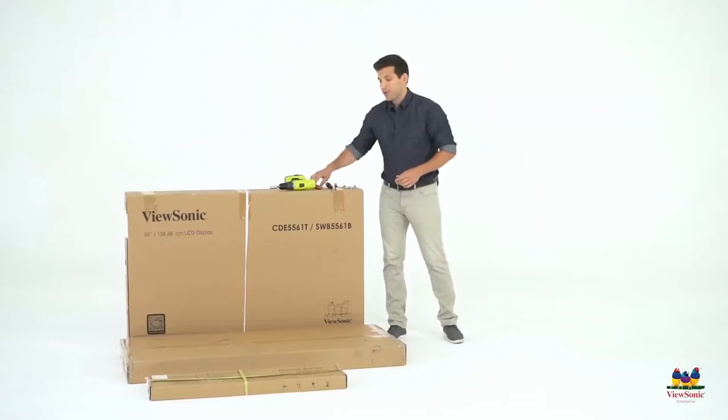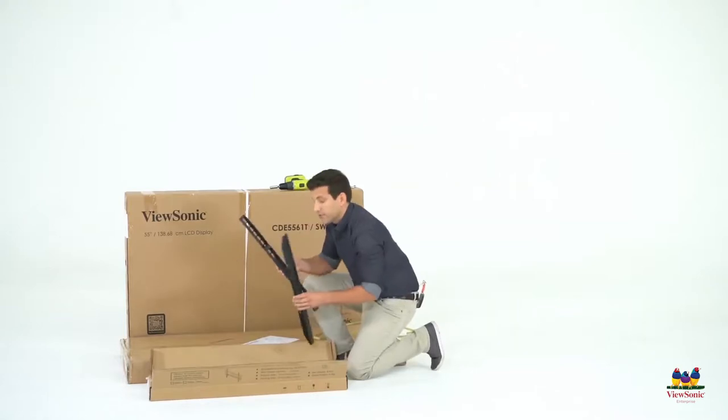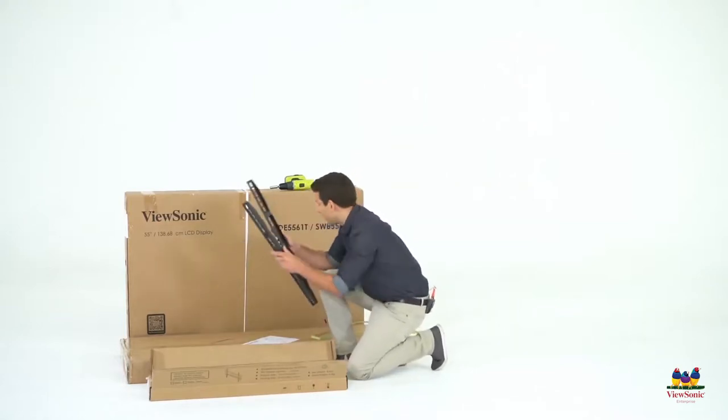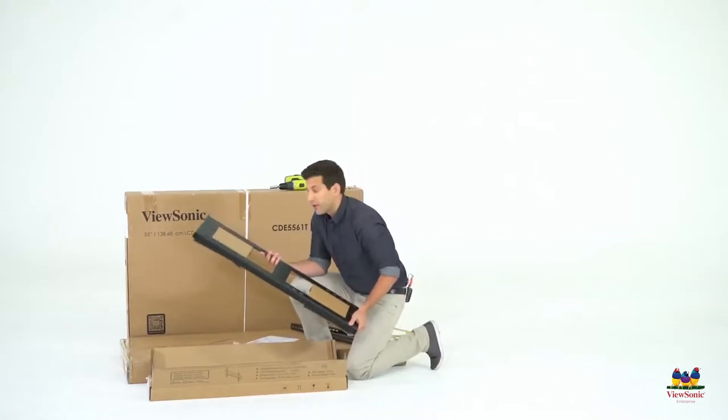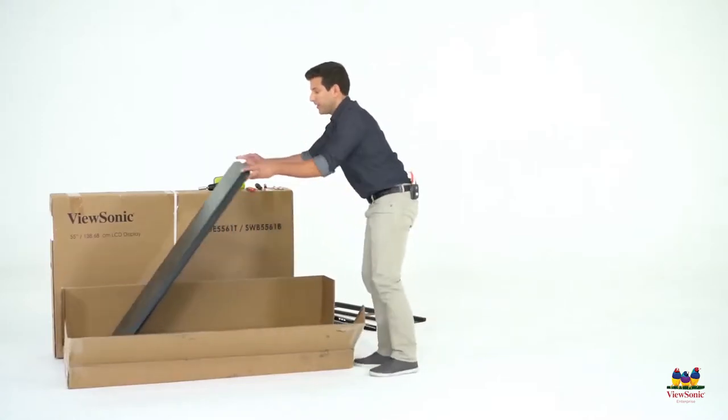Alright, first things first, let's unbox the wall mount and the rolling cart. These are the wall mounts that will be attached to the display later on, so we'll set those aside for now. This is a standard VESA wall mount that will be attached to the rolling cart. Be careful because this can be a little heavy.